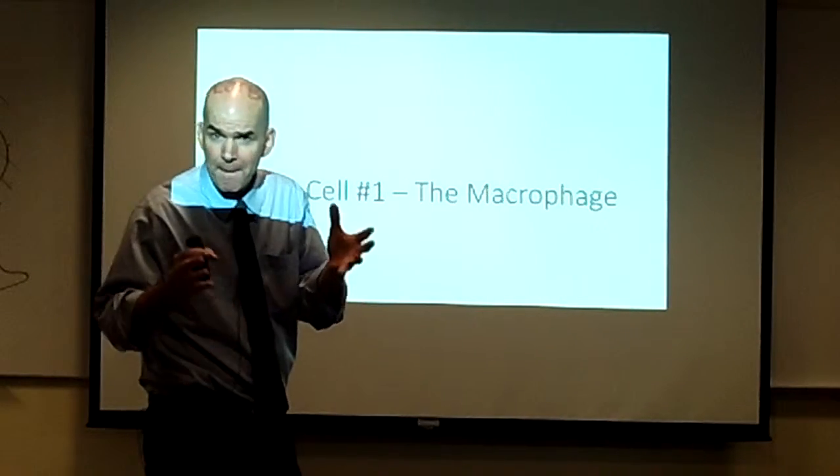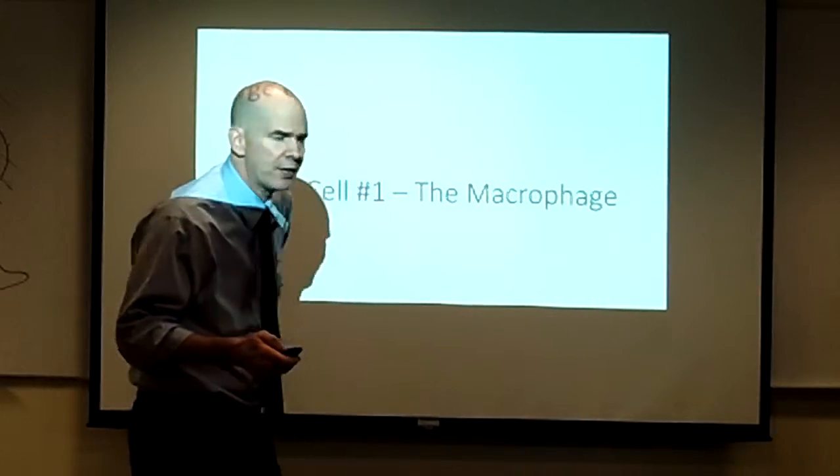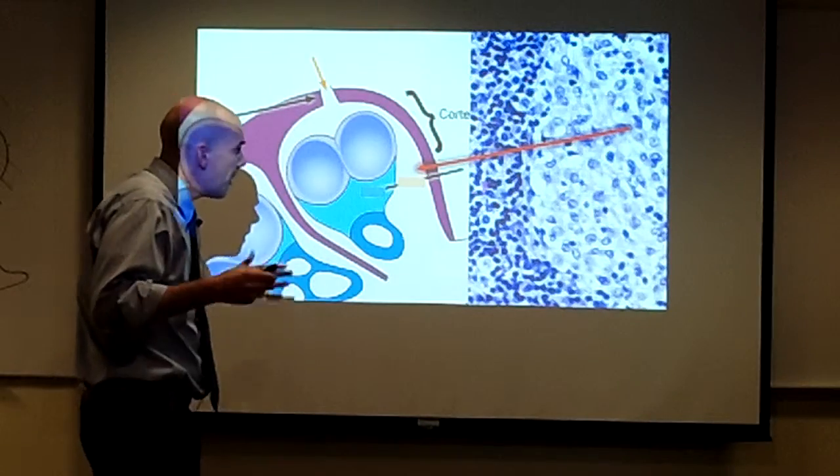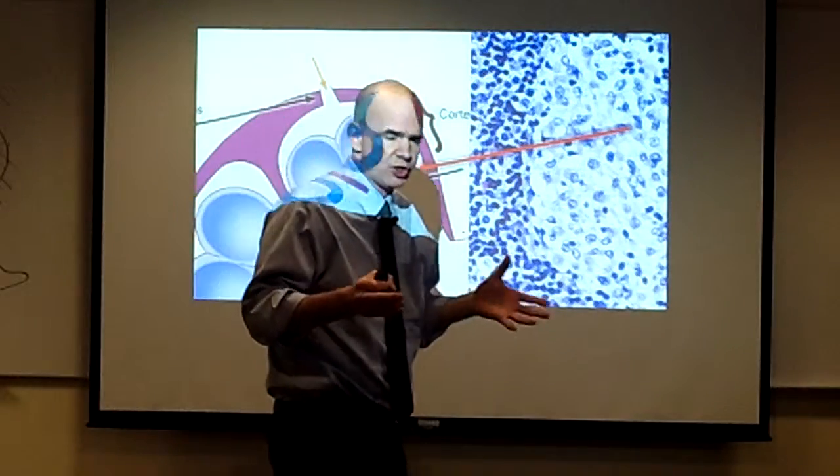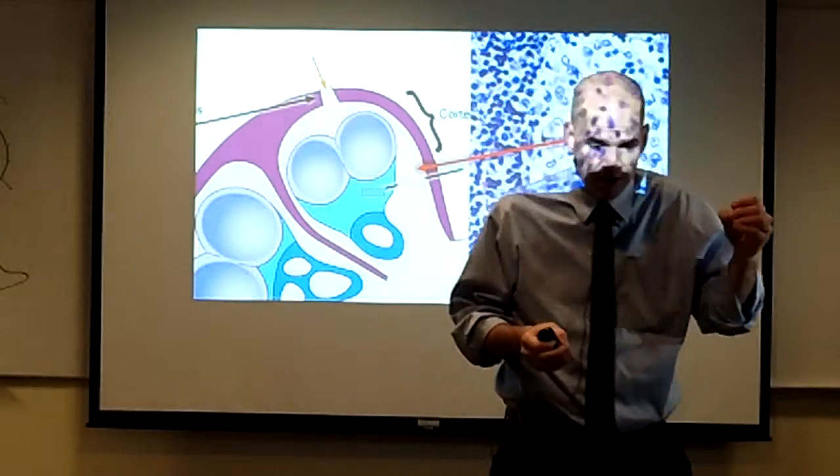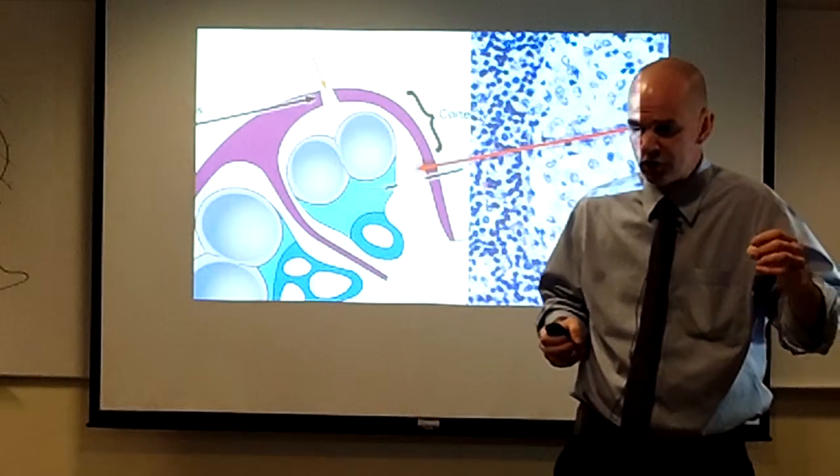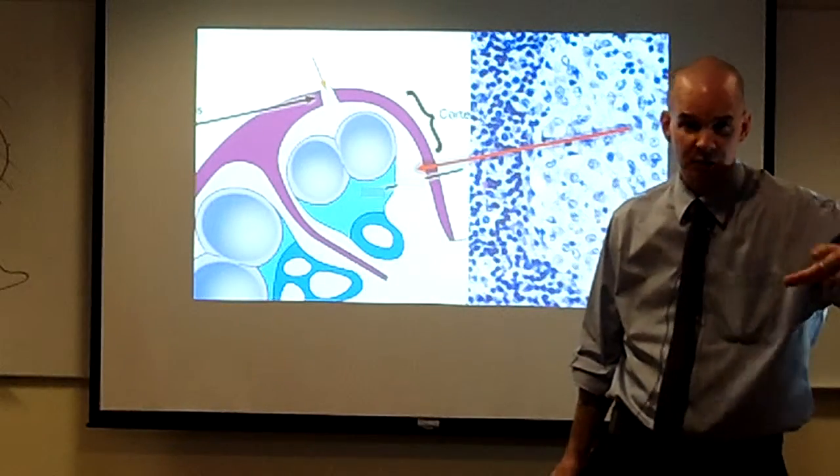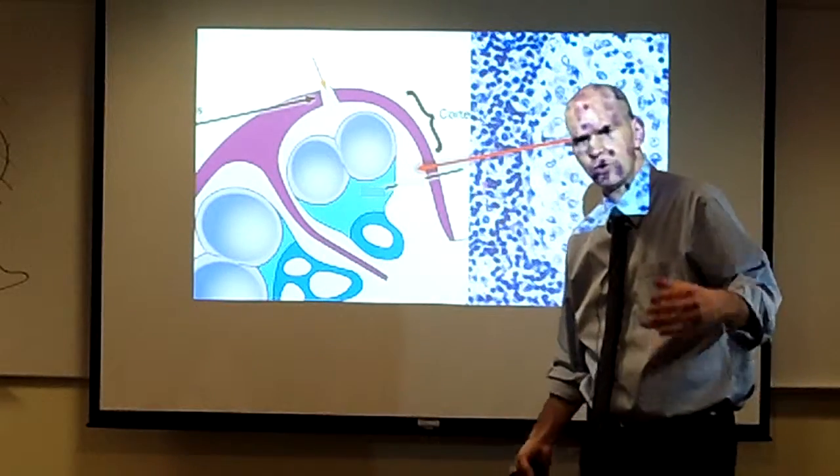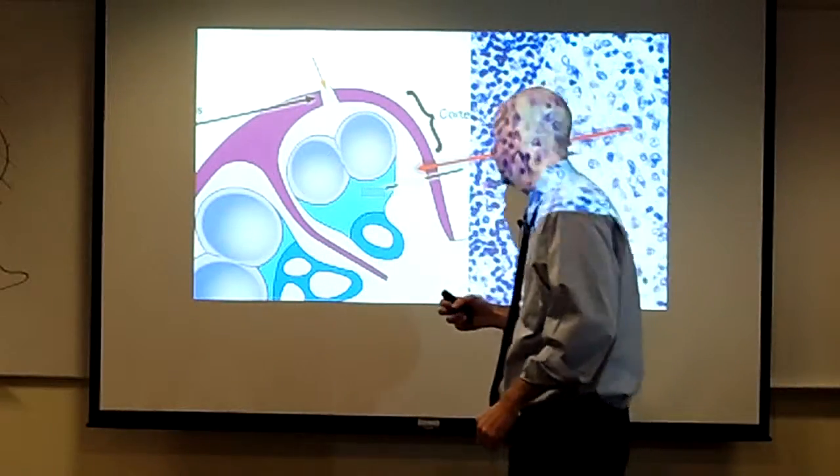Macrophages are our first big cell that we're going to talk about in the lymph node. Macrophages are considered large cells because they have a nucleus that is greater than or equal to twice the size of a mature lymphocyte nucleus. That's sort of how we'll define large cell here.